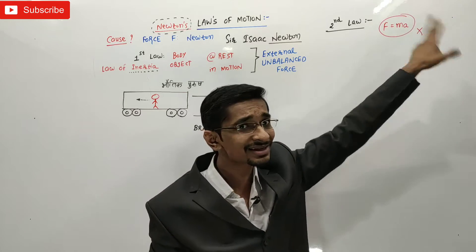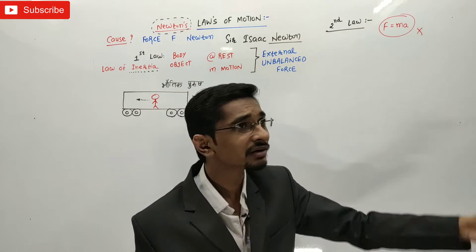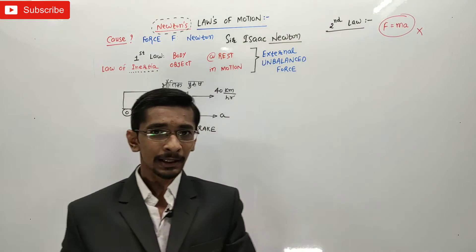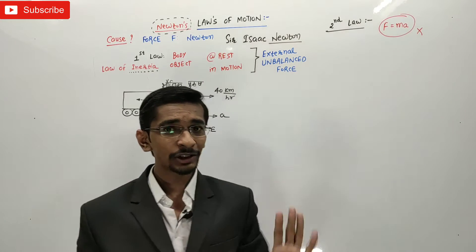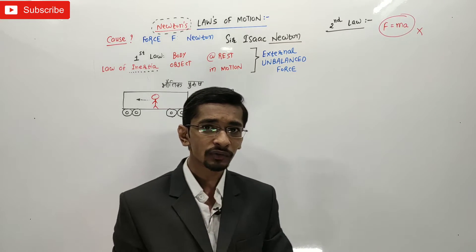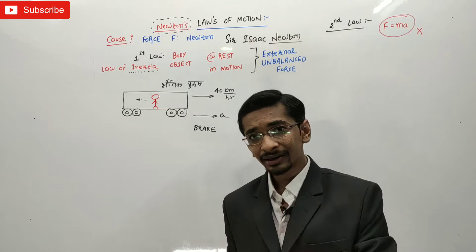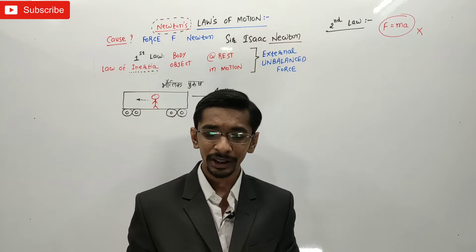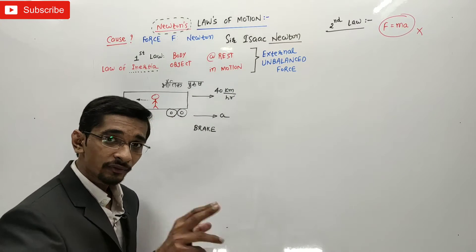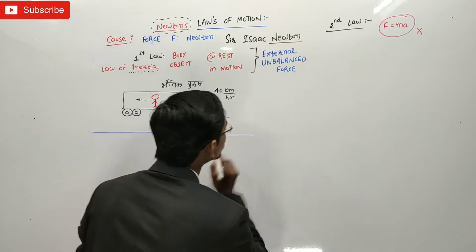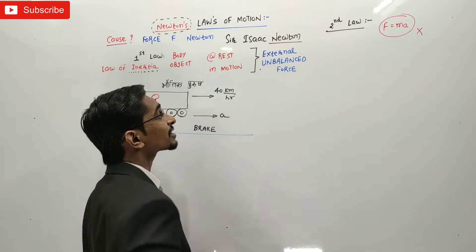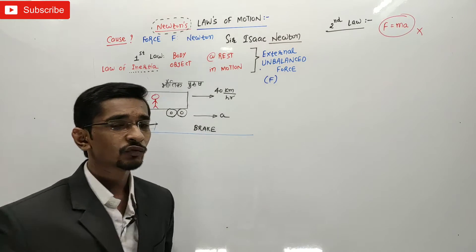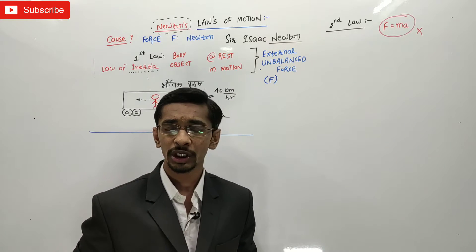Force is the cause of this acceleration, and acceleration is the effect — jiska cause hai F. Or jiska acceleration ho raha hai, woh mass hai M. But this is not the actual law. The actual law is: rate of change of linear momentum is directly proportional to F, which is an external unbalanced force. Tab hi woh body accelerate kar payegi, ya toh uska momentum change kar payega.